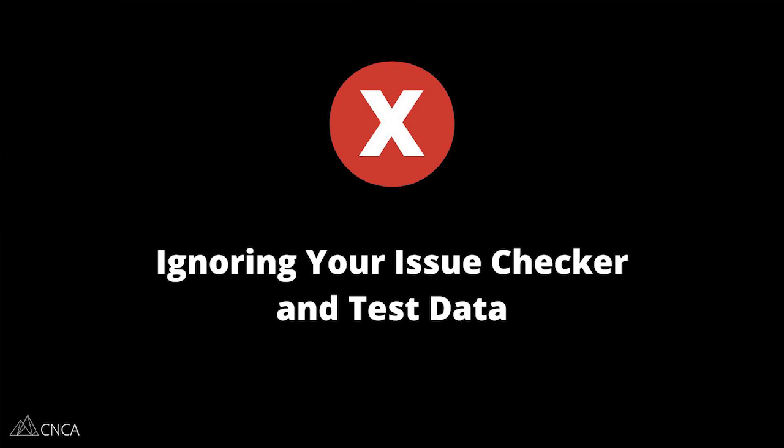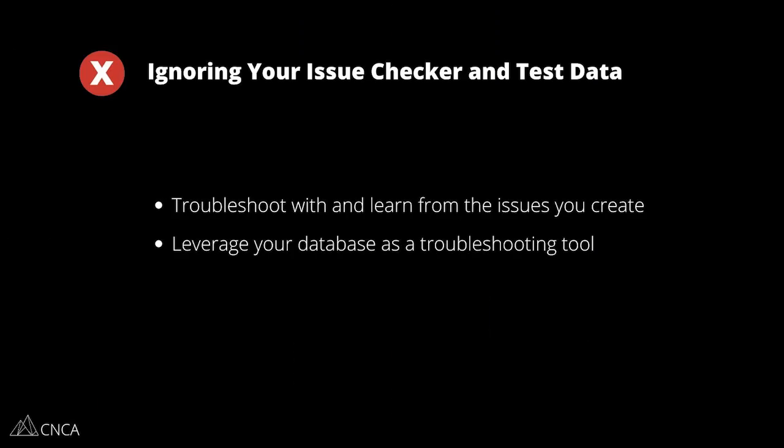The next common mistake we see is ignoring the issue checker in your editor and also your database as a way to troubleshoot problems. We are not going to get the logic right from the beginning — that's very normal. You're going to encounter issues and need to troubleshoot and solve them. Your issue checker is there for a reason. Don't ignore it. You're going to create extra work for yourself if you let issues grow to over 100 or 200 — we've definitely seen that. Address those issues because you'll often find you need to correct a sequence of things from clearing out just one. The less issues you have present, the more accurate your testing is actually going to be.